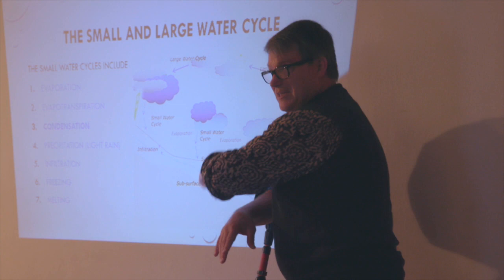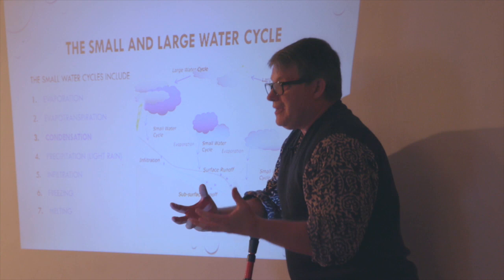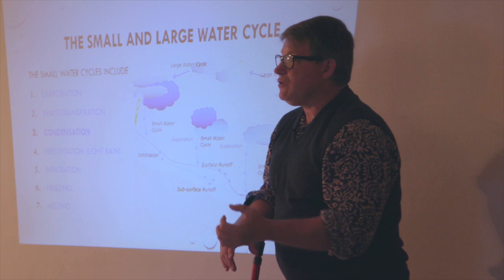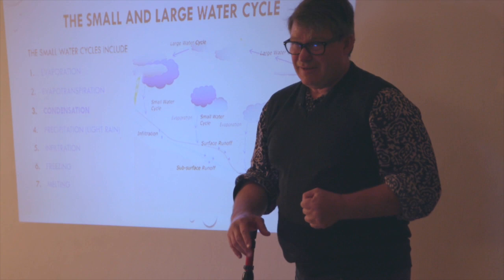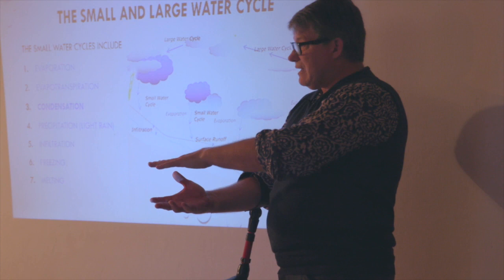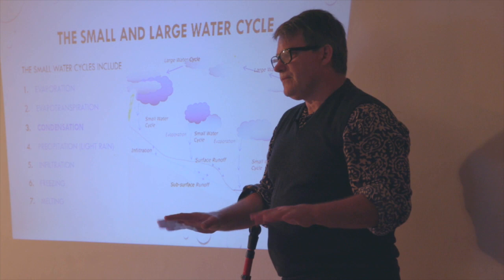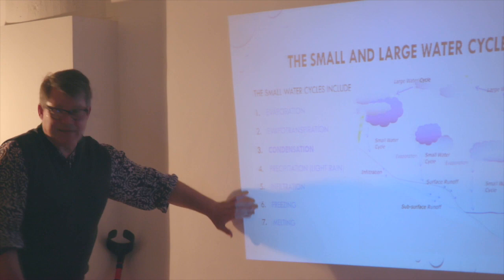If we look at Spain or Australia, a lot of the agriculture is using the water from underground. And a lot of that water reserve is now depleted. Some farms are using saline water or salt water because all that fresh water is gone. And then we have freezing and melting - but that's the small water cycle.